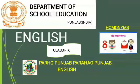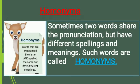We are going to start with class 9 English grammar and the topic is homonyms. Homonyms are words that are pronounced the same and spelled the same but have different meanings. We often call them look-alike, sound-alike words. Sometimes two words share the pronunciation but have different spellings and meanings. Such words are called homonyms.